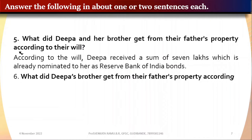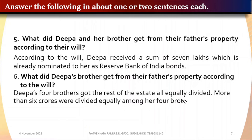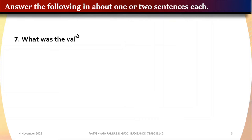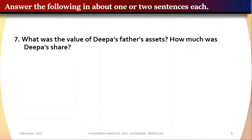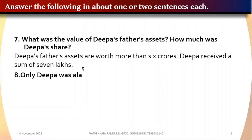Question 6: What did Deepa's brothers get from their father's property according to the will? Deepa's four brothers got the rest of the estate, all equally divided — more than six crores divided equally among them. Question 7: What was the value of Deepa's father's assets and how much was Deepa's share? The assets were worth more than six crores; Deepa received seven lakhs.